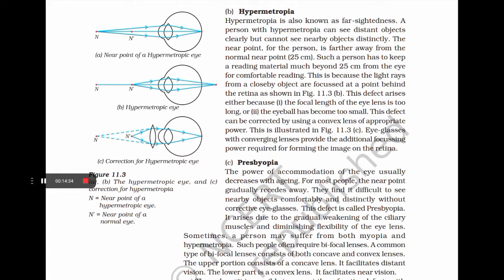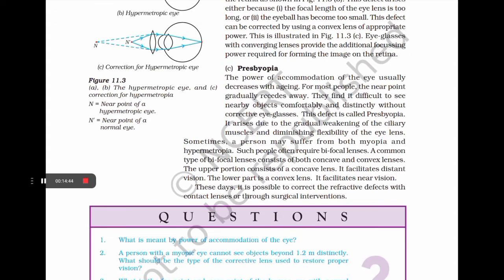Presbyopia occurs as the power of accommodation of the eye usually decreases with aging. The near point gradually recedes away, making it difficult to see nearby objects comfortably. This defect arises due to the gradual weakening of the ciliary muscles and diminishing flexibility of the eye lens. Sometimes a person may suffer from both myopia and hypermetropia and often requires bifocal lenses — the upper portion being a concave lens for distant vision and the lower part a convex lens for near vision. Contact lenses or surgical interventions can also correct refractive defects.